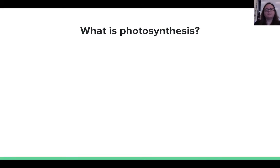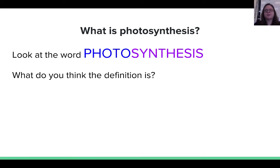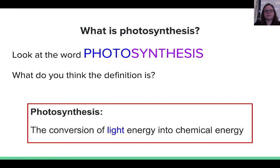So what is photosynthesis? First, think about whether organisms that go through photosynthesis would be an autotroph or a heterotroph. If you look at the word photosynthesis and its two roots — photo and synthesis — what do you think the definition is? The actual definition of photosynthesis is the conversion of light energy into chemical energy. So you're synthesizing energy using light.